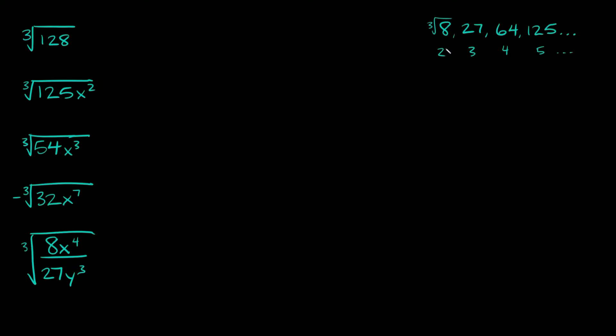Or you can think about it the other way: 2 cubed would be equal to 8, 3 cubed is equal to 27, 4 cubed is equal to 64, and so on.